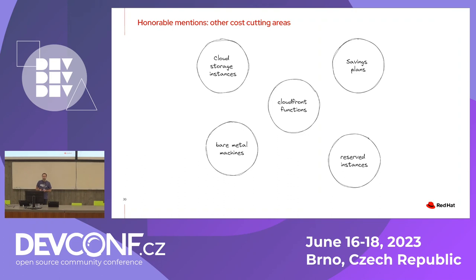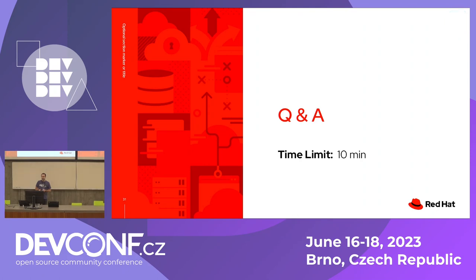There are multiple more topics we could cover. We briefly mentioned some and chose not to include others as they are not general enough advice. We could do more in the areas of cloud storage instances, cloud functions, bare metal machines, and exploring more savings plans and reserved instances. But we decided only to mention those areas here. Thank you very much — now it's time for questions.